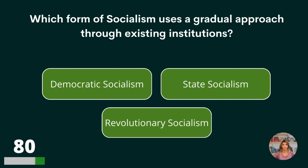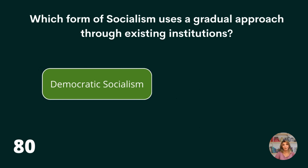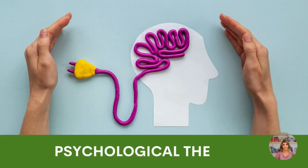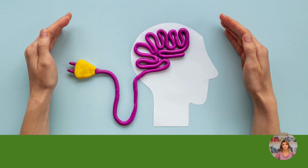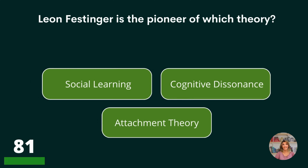Which form of socialism uses a gradual approach through existing institutions? Democratic, state, or revolutionary socialism? Democratic socialism.